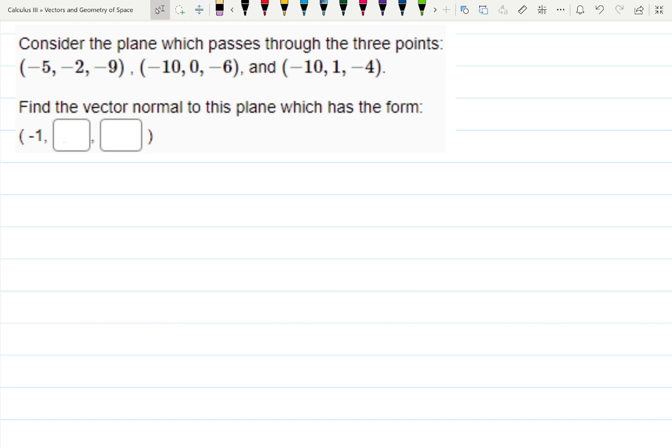For this example, they are asking to consider the plane which passes through three points and we don't need to create the equation of the plane. We just need to find the vector normal to this plane which has the form and the first coordinate is really minus one.